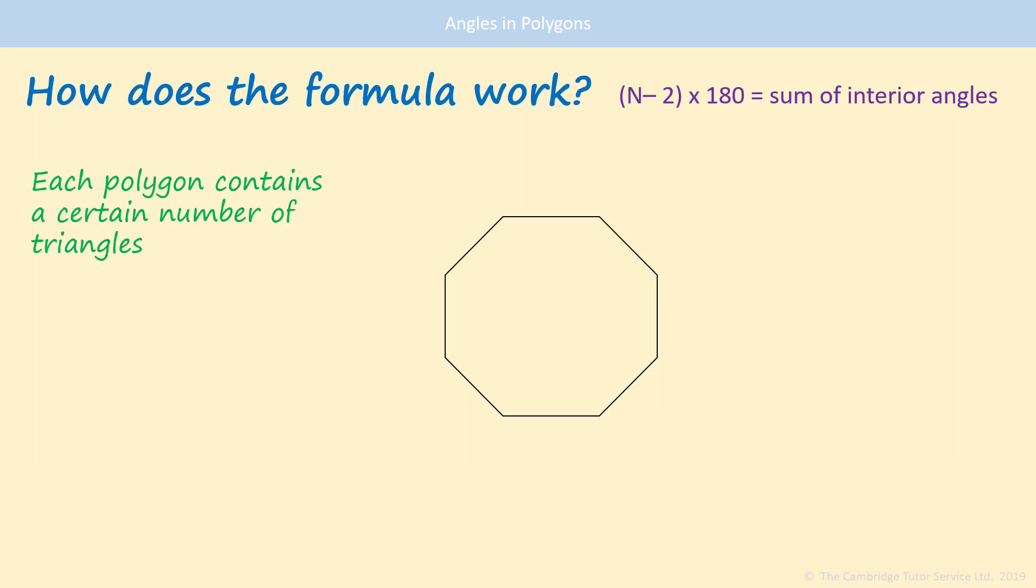Again, each polygon has a certain number of triangles. This is an eight-sided shape, an octagon, and if we divide it into the triangles, you'll see that we have 1, 2, 3, 4, 5, 6 triangles in there.